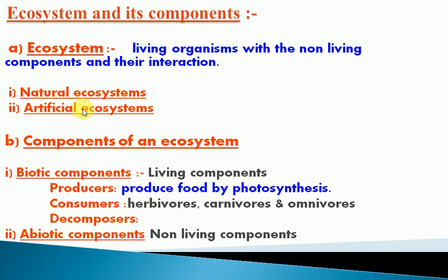So what is an ecosystem? An ecosystem is living organisms with non-living components and their interactions. Ecosystems are classified into two categories: natural ecosystem and artificial ecosystem. A natural ecosystem is created naturally without human support. An artificial ecosystem is created by humans — for example, a school, residential area, or city organized by us is called an artificial ecosystem.